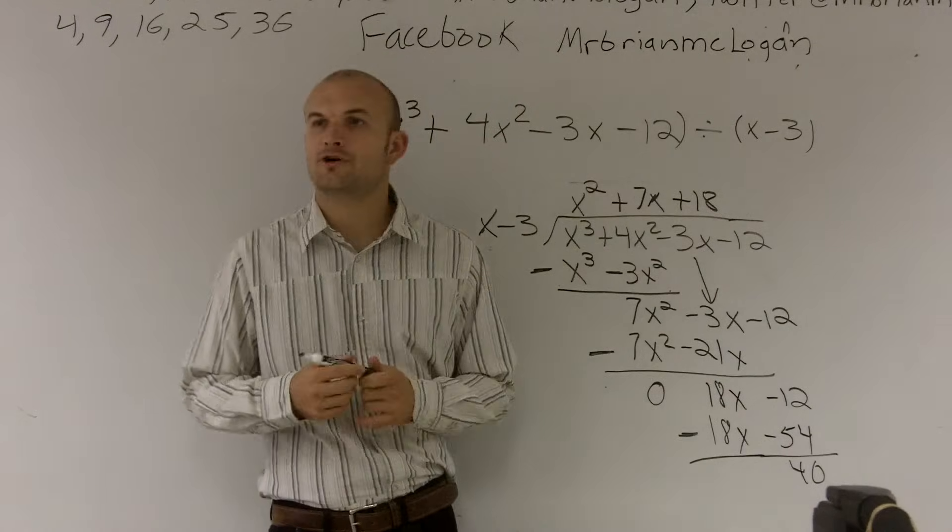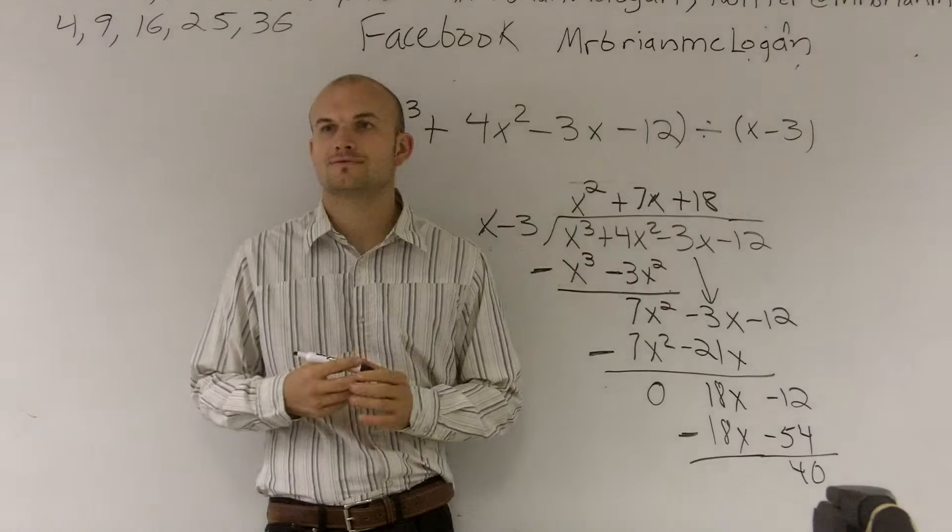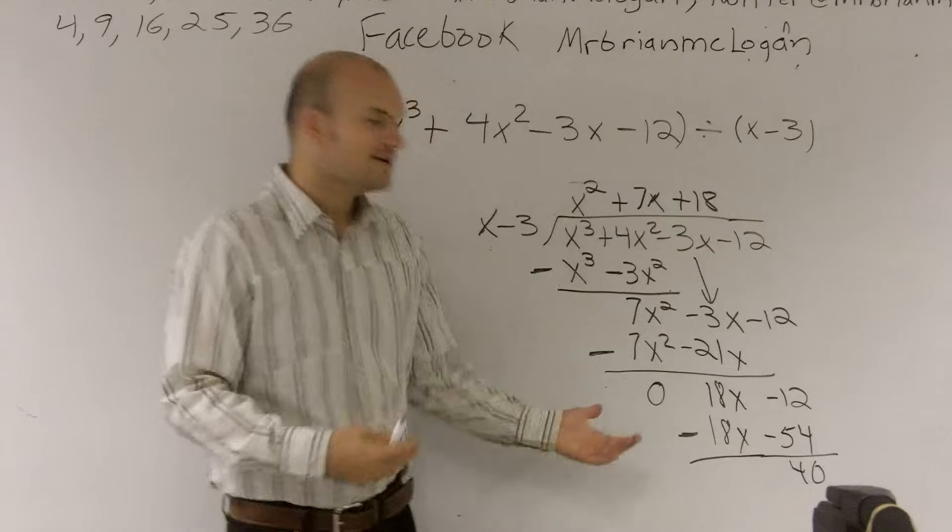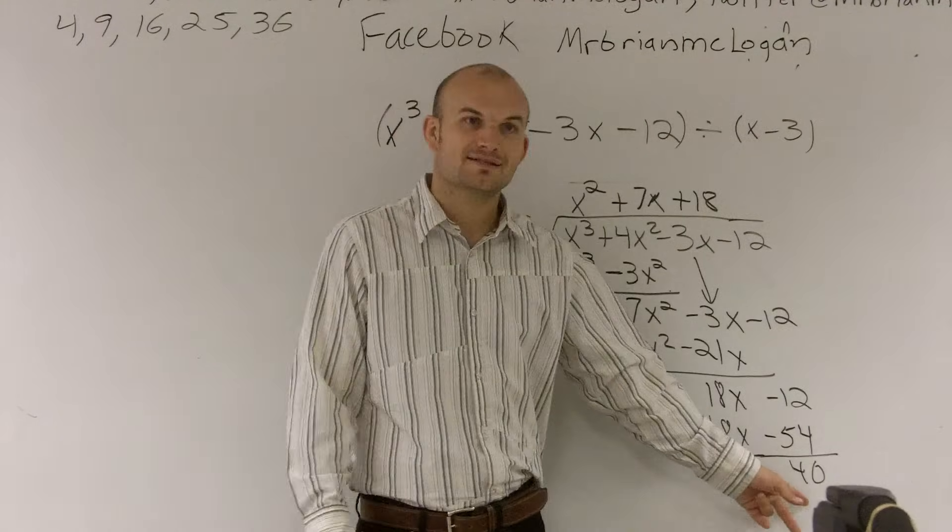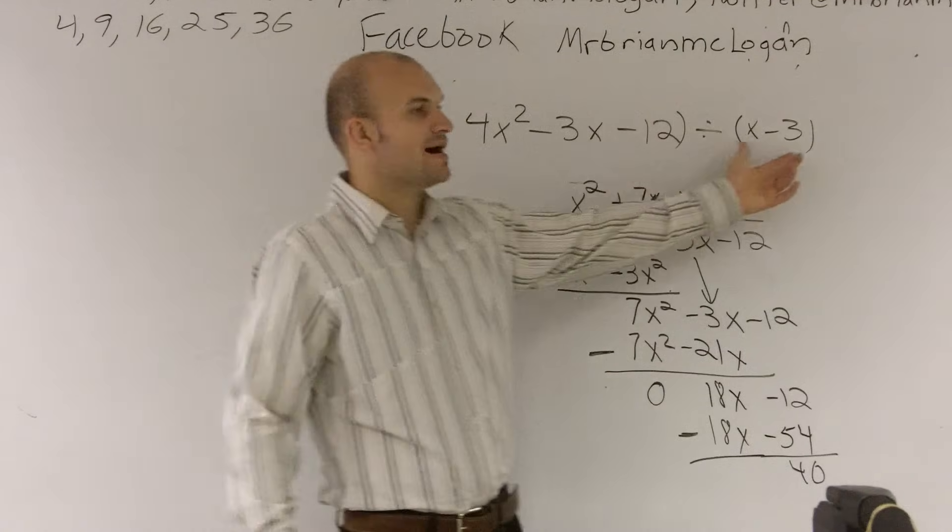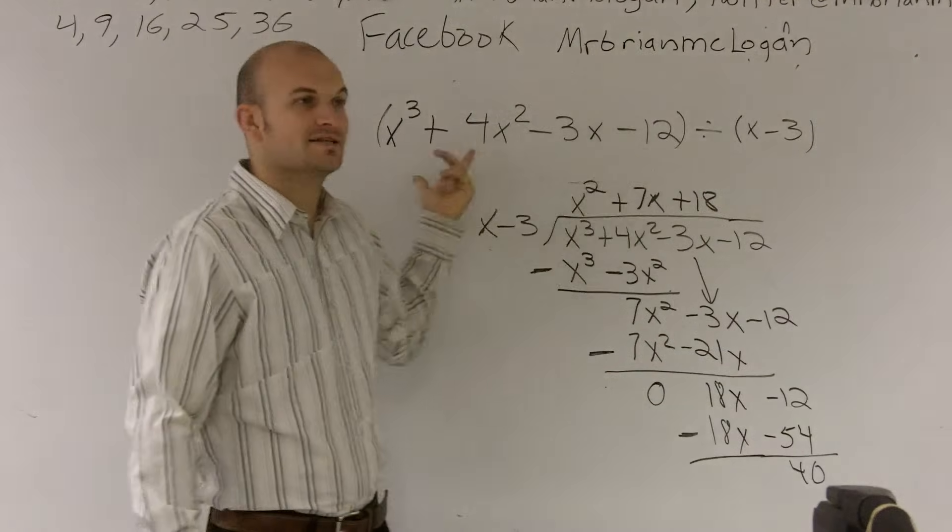Now, do you guys remember in like 3rd or 4th grade, you guys did like r? Like remainder. All right. So there's your remainder. So when I have a number at the end, that's going to be my remainder. So what this tells us is this binomial does not evenly divide into this polynomial.